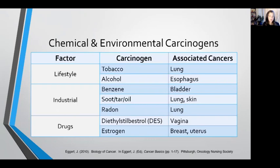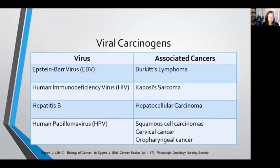Here are some examples of chemical and environmental carcinogens. Tobacco contains several different types of carcinogenic chemicals that have been linked to many cancers, most notably lung cancer. Alcohol has been linked to esophagus cancer. Industrial carcinogens such as benzene, soot, tar, oil, or radon have been linked to several different types of cancers. And certain drugs have also been linked to certain cancers, such as diethylstilbestrol with vaginal cancer, or high doses of estrogen with breast and uterine cancer.